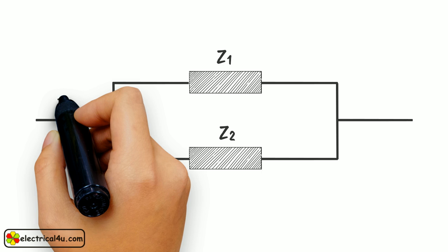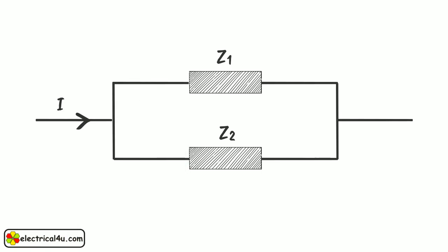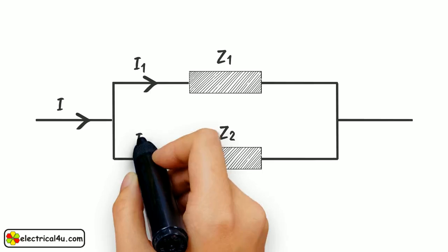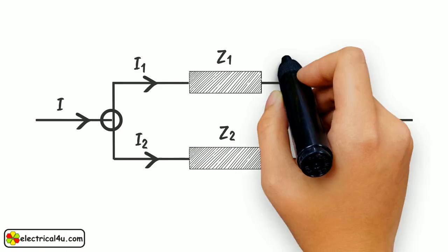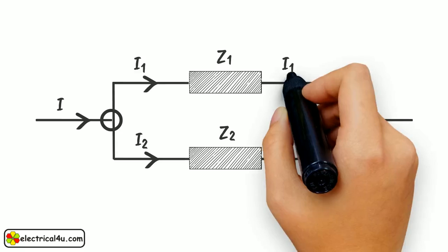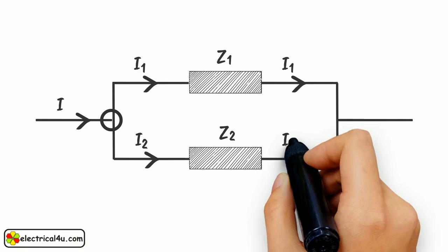A current I passes through the system. This I is then divided into I1 and I2 at this junction. I1 and I2 pass through Z1 and Z2 respectively.